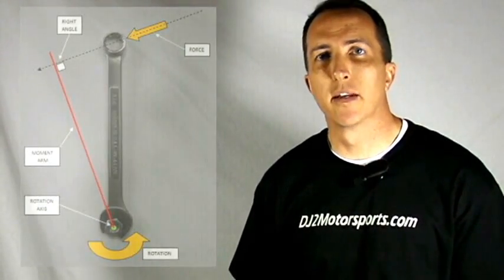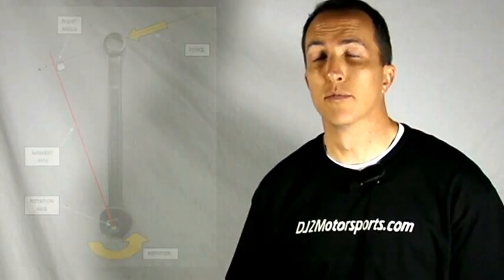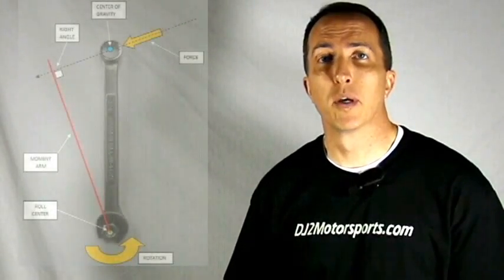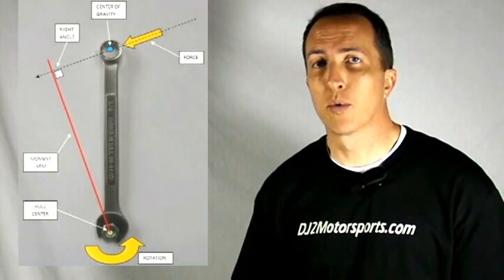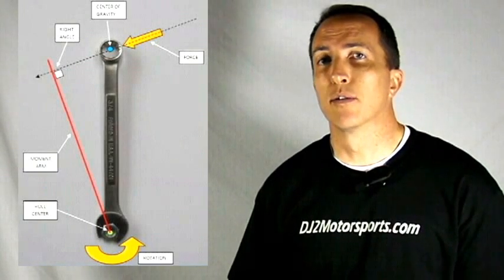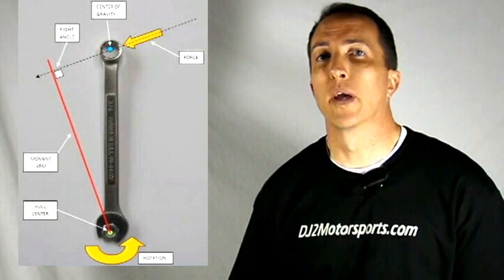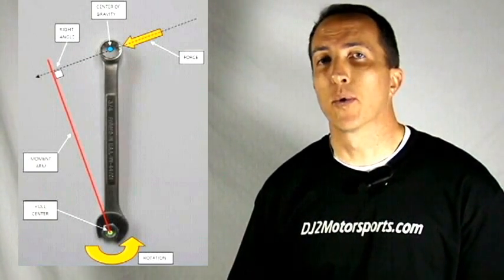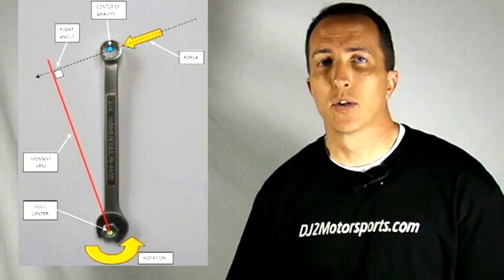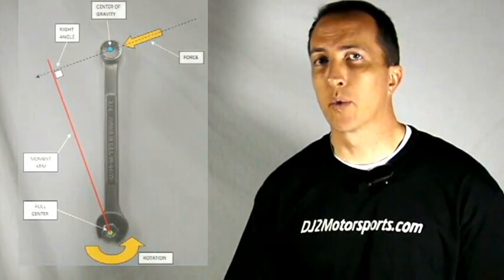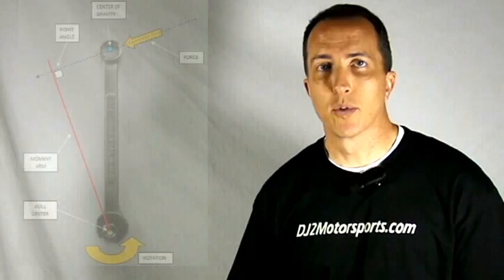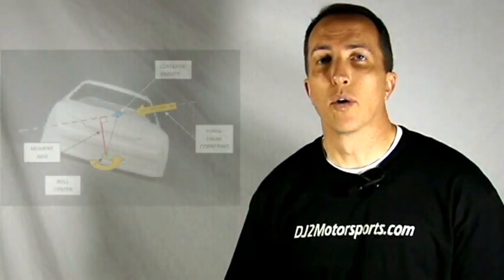Now let's tie that into how the forces affect the vehicle. Instead of the pivot point being on the bolt, our pivot point on the vehicle would be our roll center, and instead of the end of the wrench we have our center of gravity. So the forces acting on the car are going through the center of gravity — like our hand on the wrench — and our pivot point is our roll center for the vehicle.